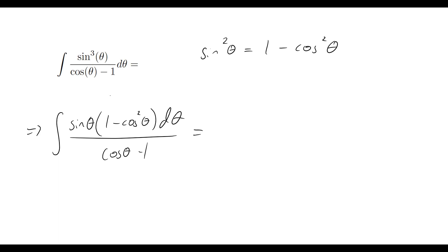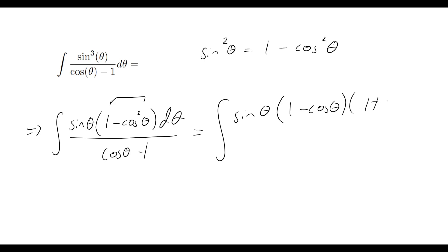The next thing we need to do is recognize that we've got the difference of two squares. We can rewrite that in a nicer form: sine theta times 1 minus cos theta times 1 plus cos theta, d theta, still all over cos theta minus 1. Note that we've got cos theta minus 1 on the bottom, and 1 minus cos theta plus 1 plus cos theta on the top.